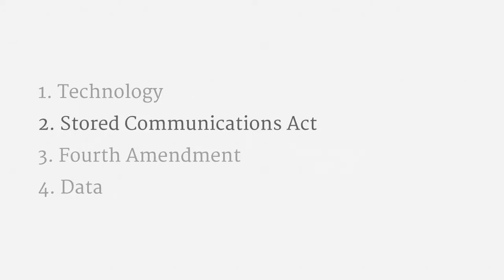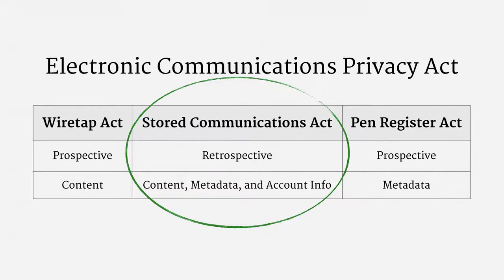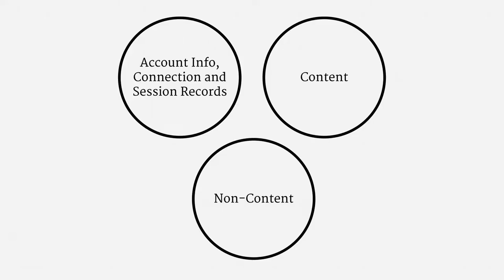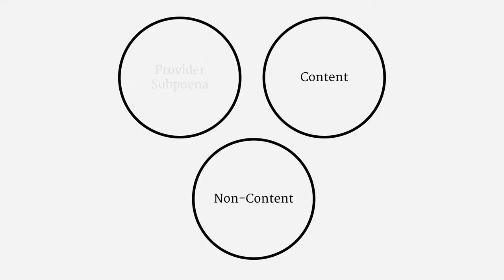Now let's turn to the Stored Communications Act. The SCA is the part of the Electronic Communications Privacy Act that deals with retrospective information. There are three categories of data under the SCA: first, account information as well as connection and session records, accessible with a justice subpoena; second, content, which requires a warrant; and finally, the catch-all category of non-content, which requires a D-order.